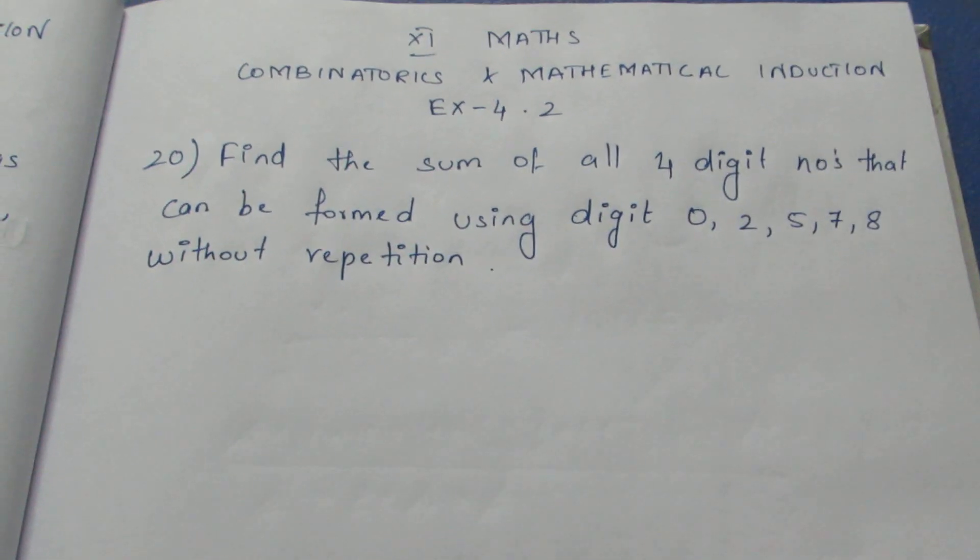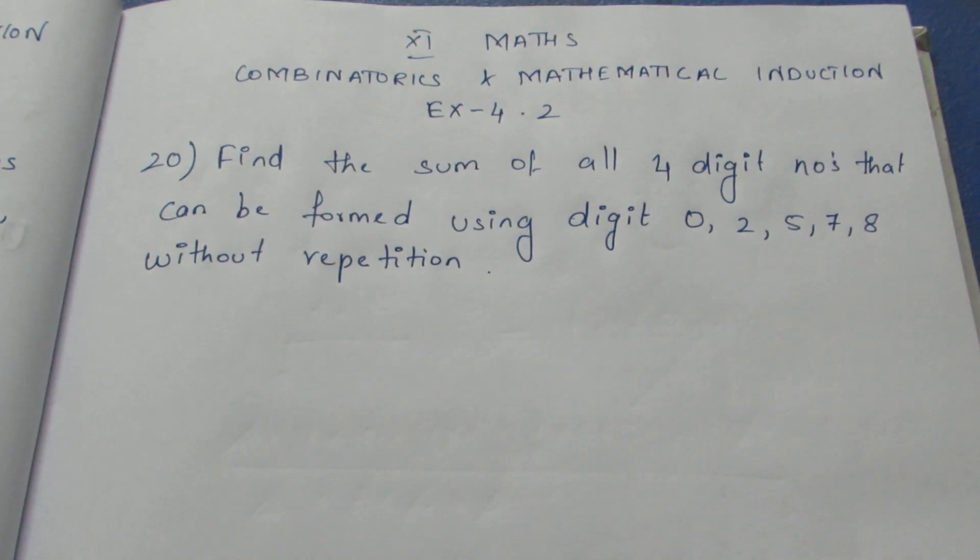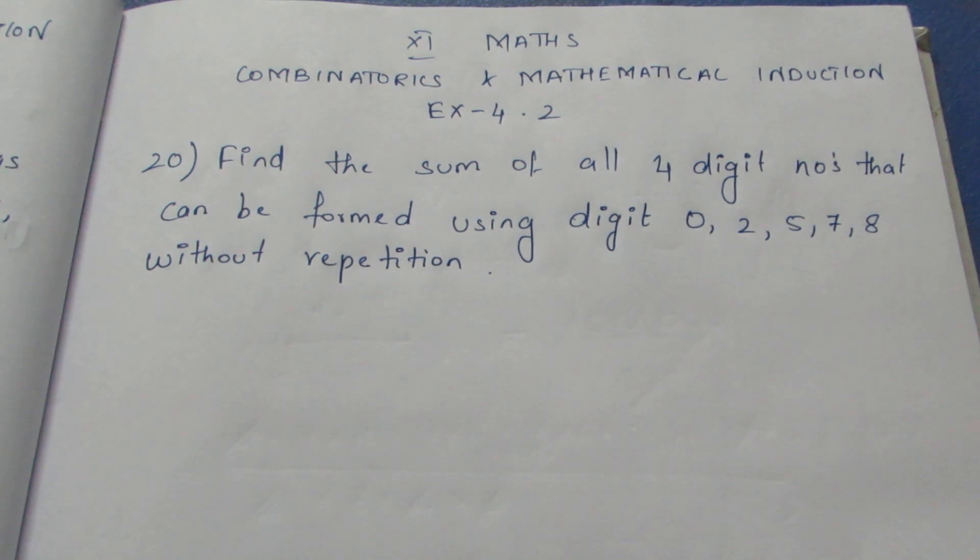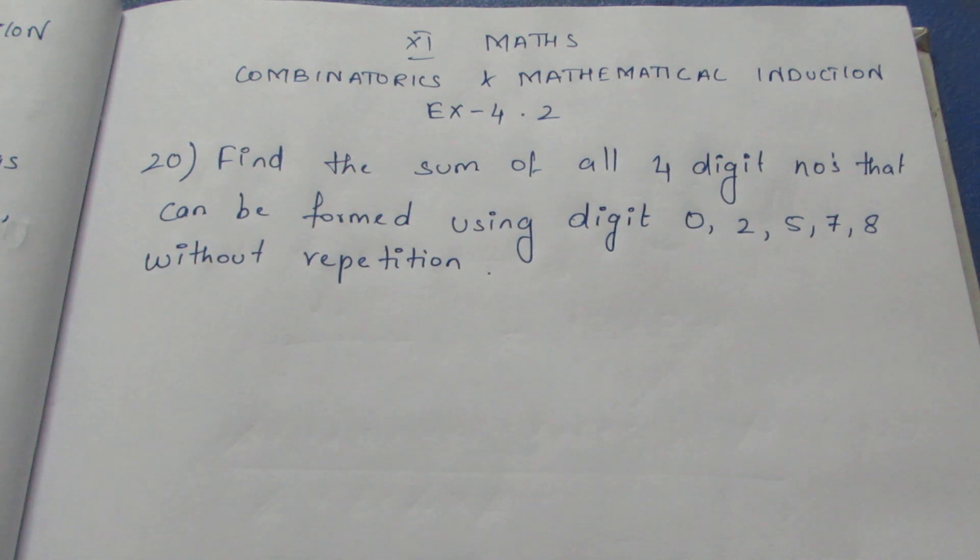Hello viewers, I am I3. NCERT 11th Maths, Combinatorics and Mathematical Induction Exercise 4.2, Sum Number 20. Find the sum of all 4-digit numbers that can be formed using the digits 0, 2, 5, 7, 8 without repetition.